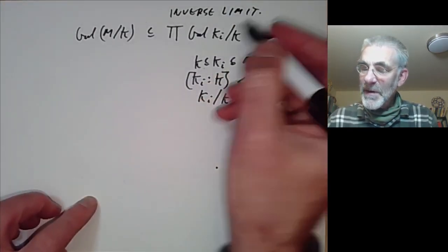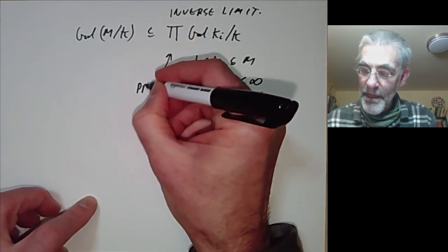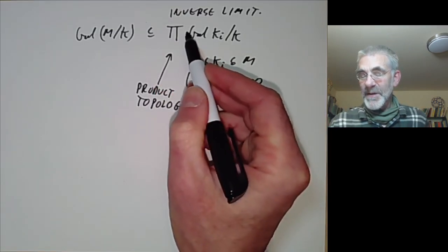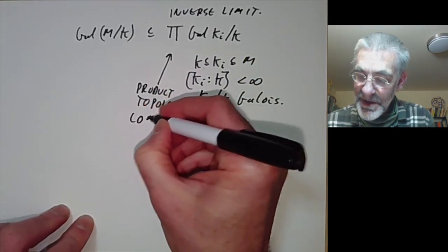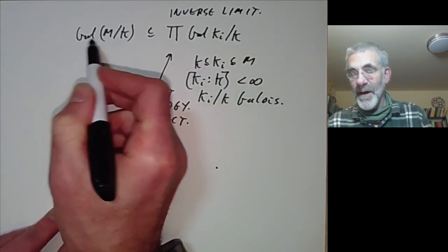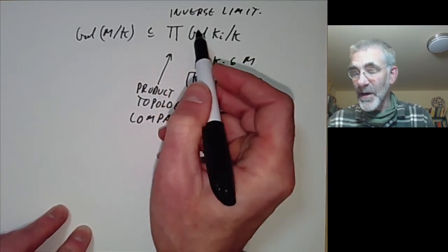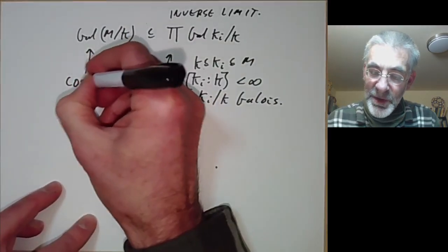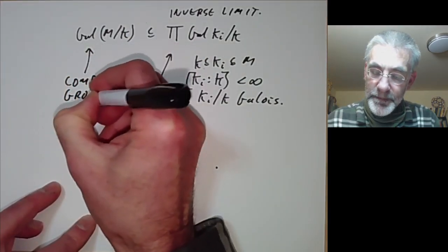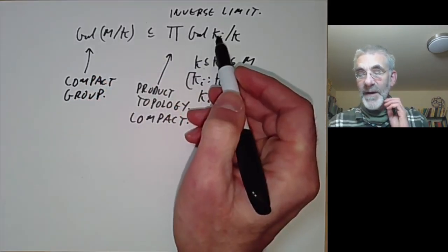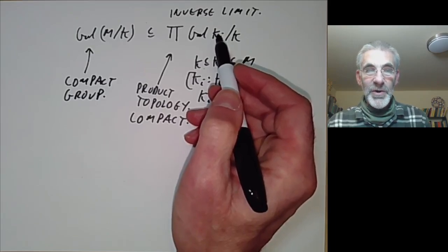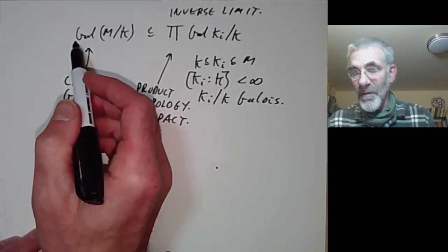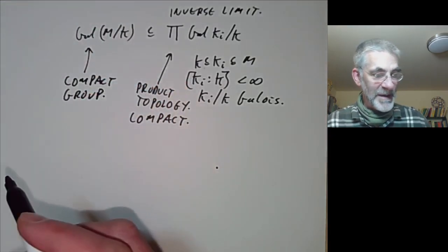We give this product the product topology. It's a product of finite sets, so the product topology is compact. The Galois group is a closed subgroup of this product, so it is also a compact group. It's a projective limit of finite groups — such groups are sometimes called profinite groups. The classical example of a profinite group is the Galois group of an infinite extension.